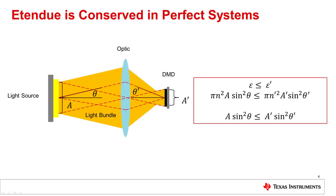An extremely useful and important property of etendu is that it is conserved in a perfect optical system. In the example above, we show an image of a source being formed onto a DMD using a converging lens. At any point in the optical system, etendu can be calculated, and it will never be less than the etendu of the original source. For the example shown, the etendu calculated using the area and cone angle of the image will be greater than or equal to that calculated at the source.